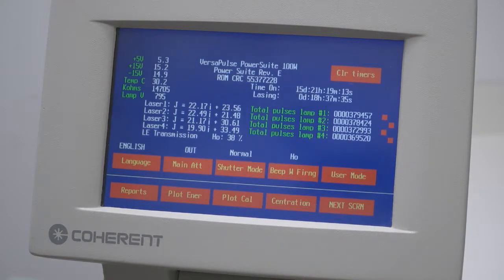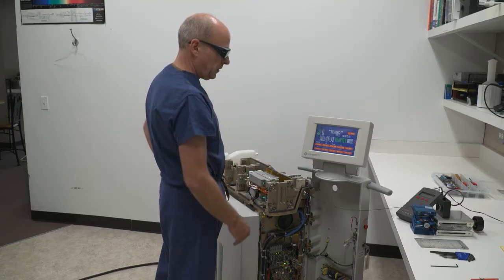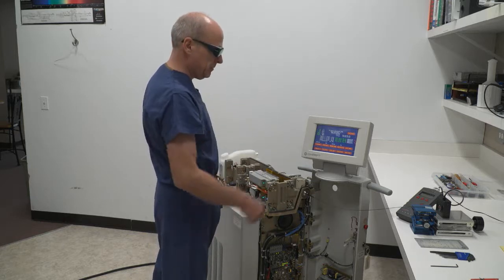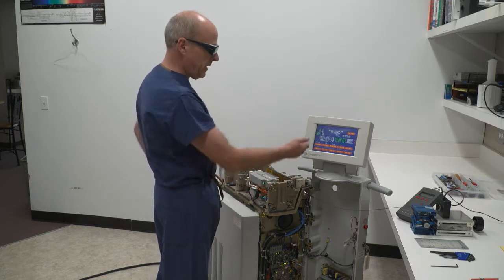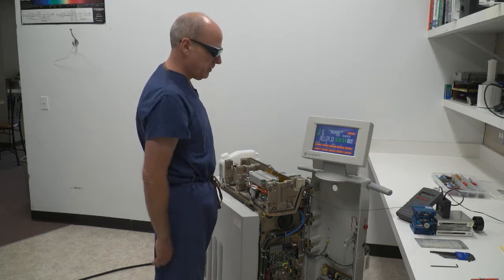The next screen allows me to look at the number of pulses on each brick, how much time is on the laser, low volt supplies, the condition of the water which should be clean because I changed the filters already. I have 15 plus meg of resistance which is fantastic.